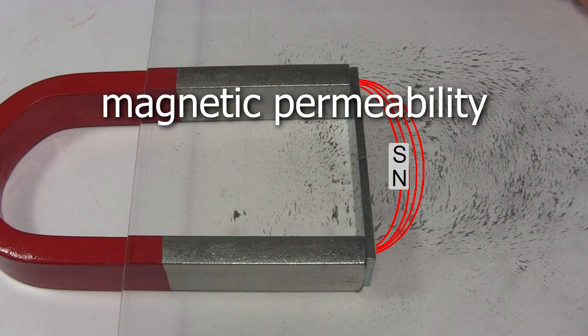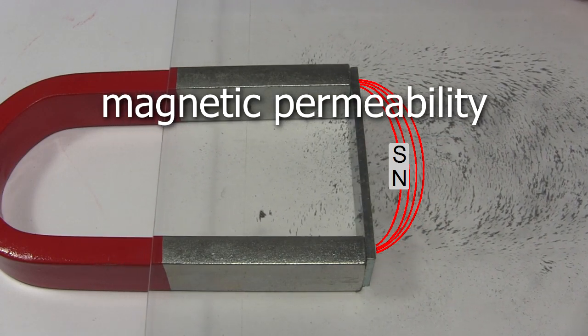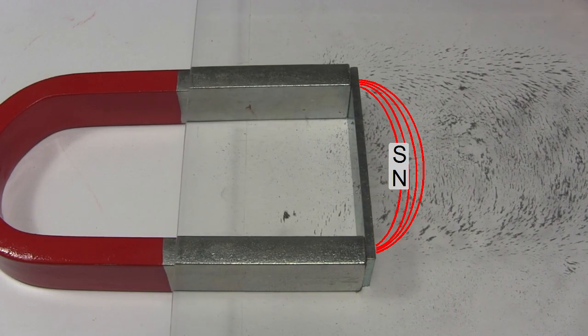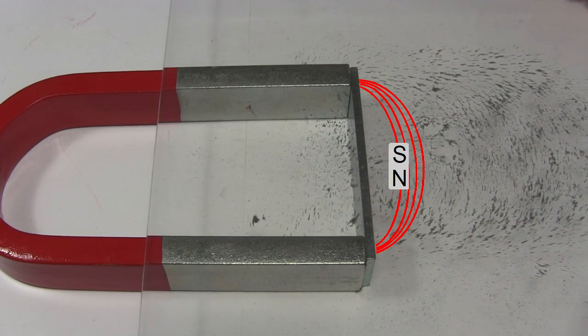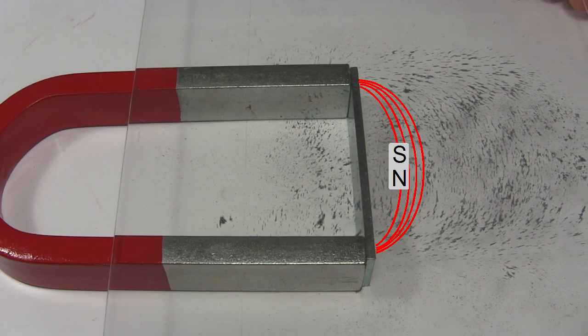Just how much they accept the magnetic field is called their magnetic permeability. Different materials accept magnetic fields to different degrees. The molecules of air don't accept a magnetic field easily, whereas the iron filings do.